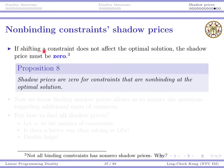If shifting a constraint does not affect the optimal solution, the shadow price is zero by definition. This gives us a proposition: all shadow prices are zero if the constraints are not binding at the optimal solution. In the chairs-and-tables example, the labor hour shadow price is zero because the labor hour constraint was non-binding at the optimal solution — modifying it a little will not modify the optimal solution.